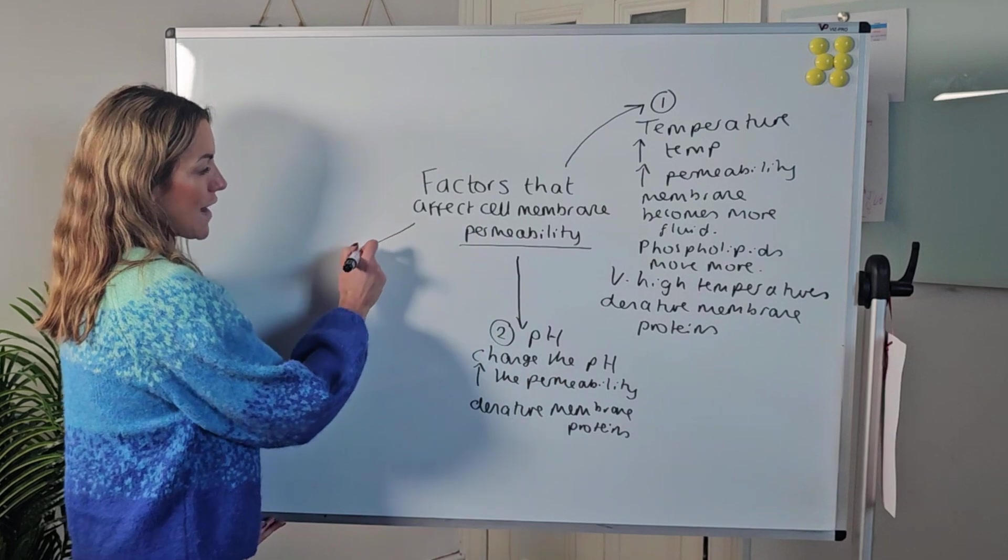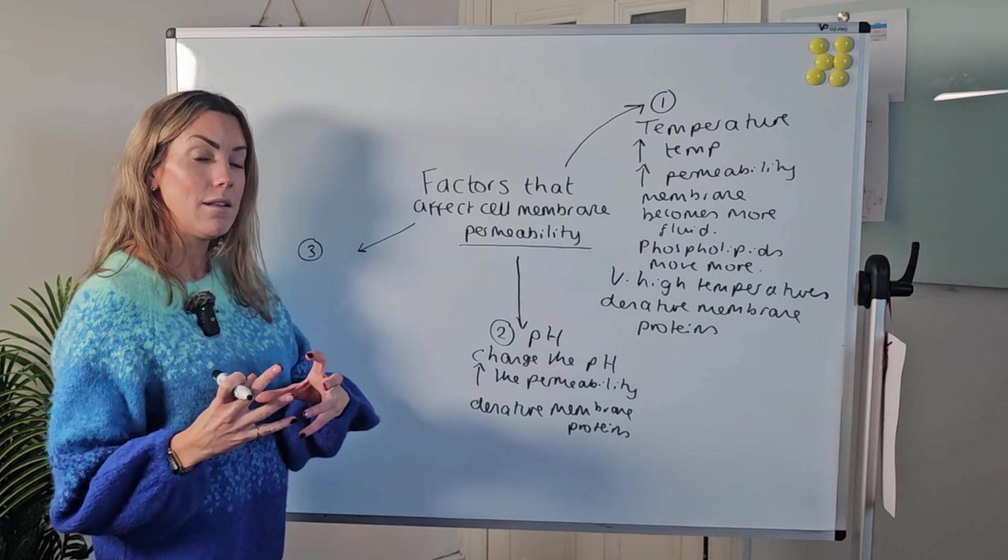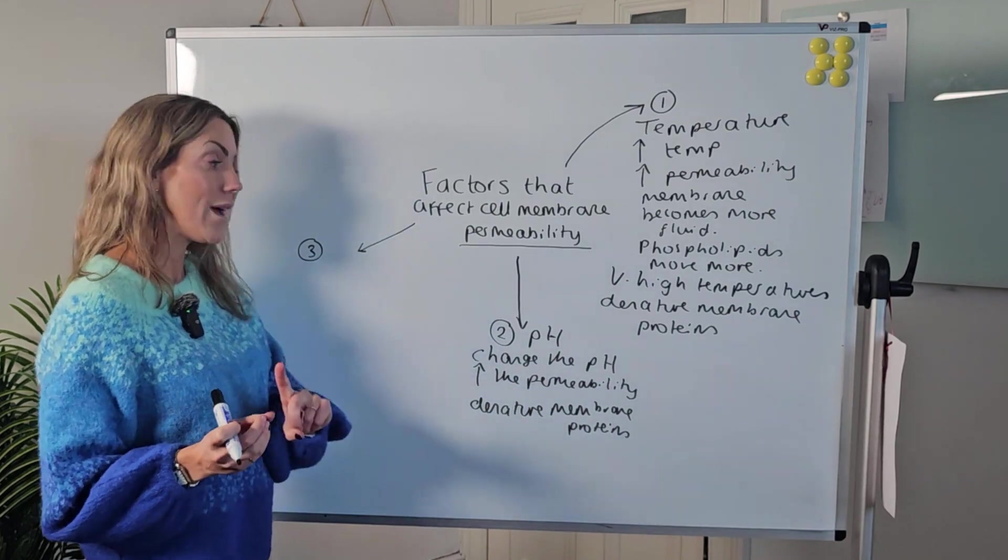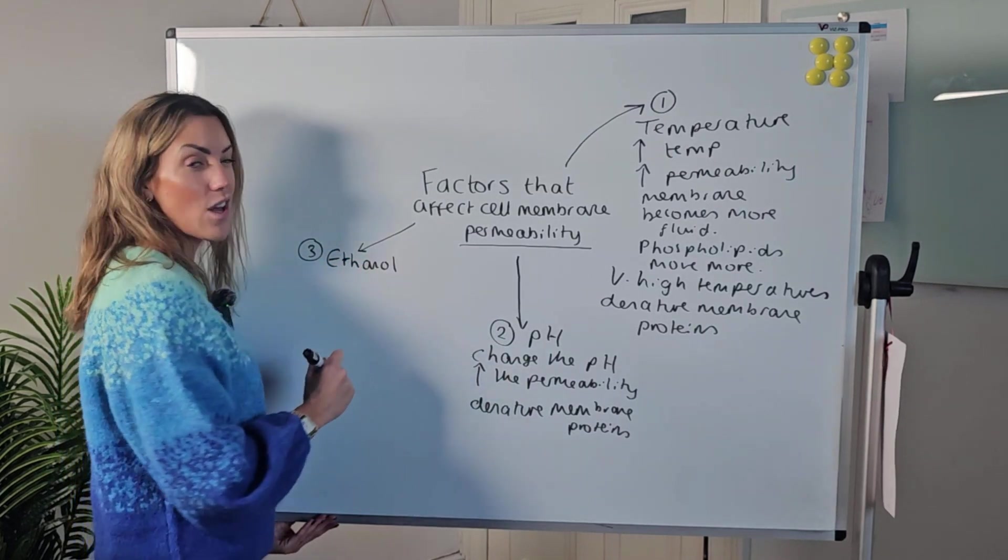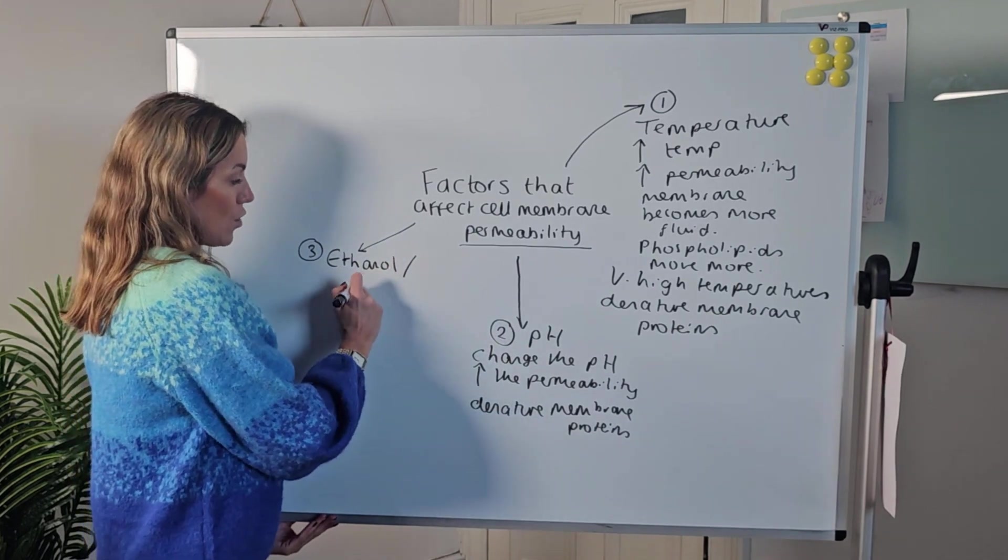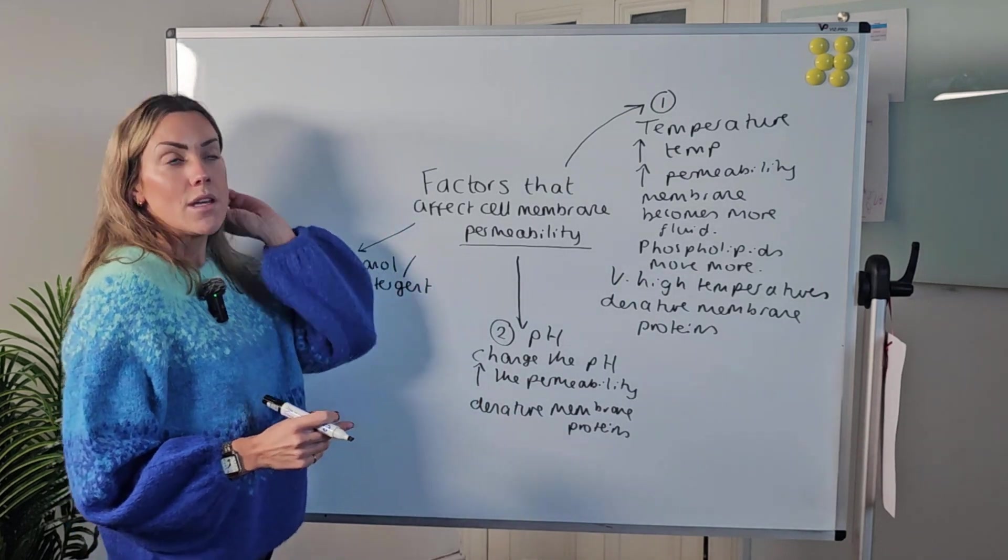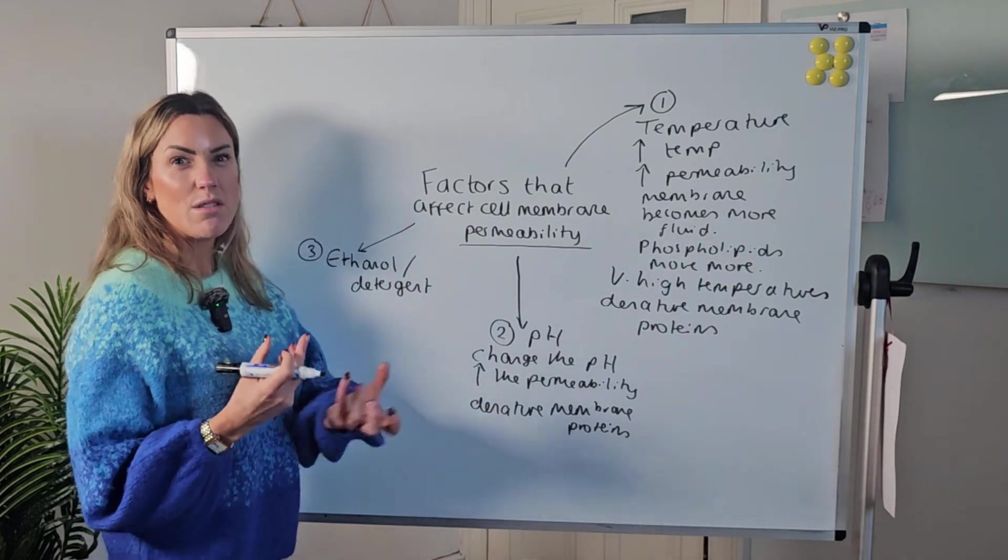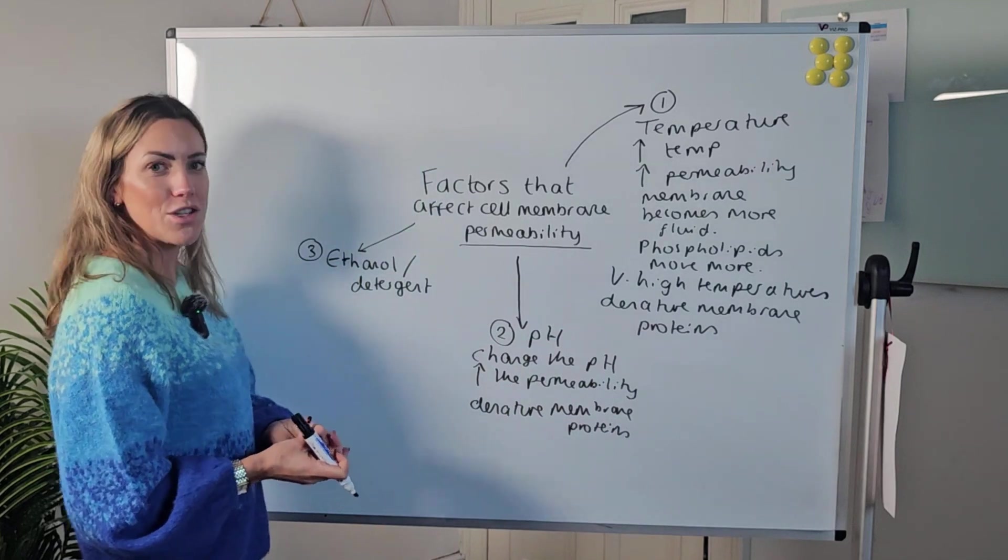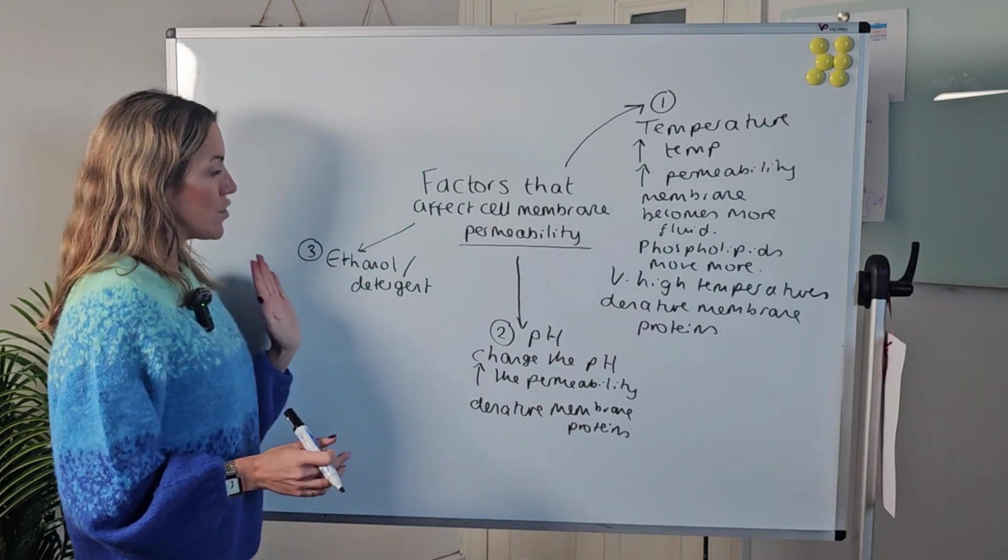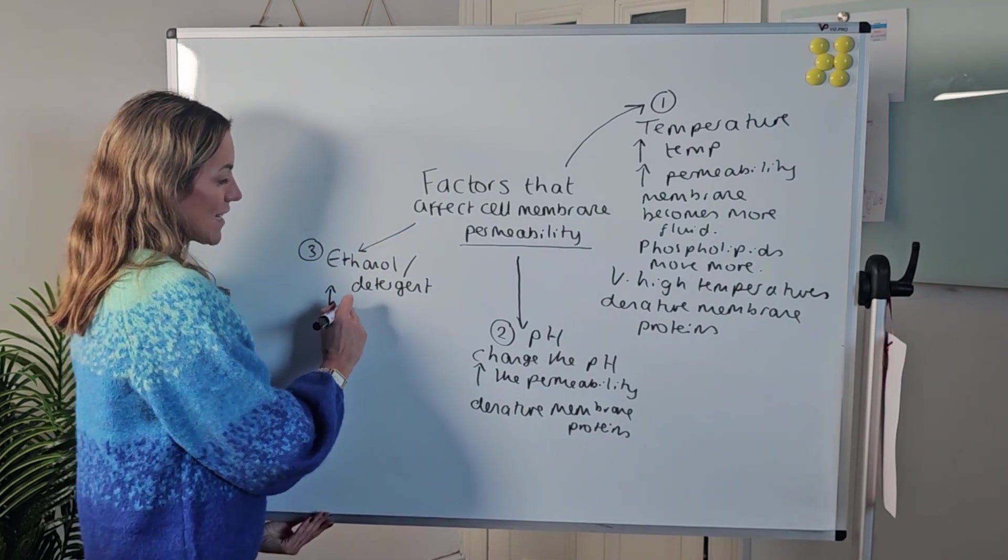The other factor we can think of is the actual solution itself that the cells and the cell surface membranes are in. For example, you might see questions where cells are being kept in ethanol or in some kind of detergent. I've even seen students carrying out practicals using washing up liquid and keeping the beetroot cells in a washing up liquid solution with some water. If you're using ethanol or some kind of detergent, this is going to increase the permeability.